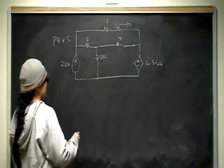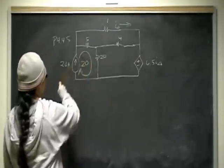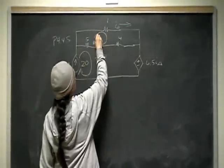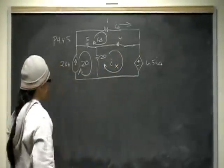So let's get started. This mesh current here is just 20 amps. This mesh current here is I delta, and this mesh current right here is some I x, and I don't know what it is.